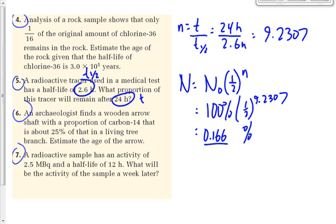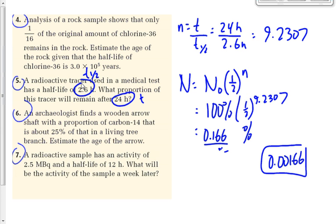If you use 100, you get 0.166%. The answer in the book is 0.00166 as a decimal — that's the decimal of the original amount, or equivalently 0.166% of the original amount. Either one is correct. Just be careful on a test — it'll specify, so make sure you do the right one.